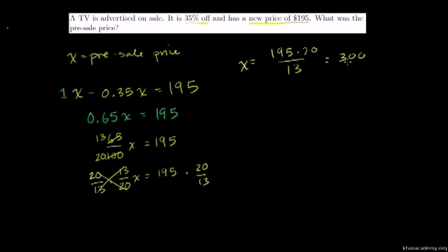So the original price was $300. Let's verify: 35% of $300 equals $105, and $300 minus $105 equals $195, which matches the sale price.